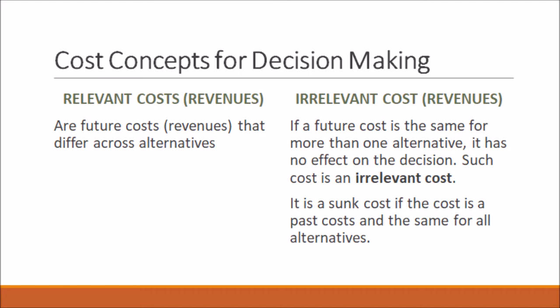What do we mean by relevant costs or revenues? These are the future costs or revenues that differ across alternatives. This may be the purchase price when considering making or buying a product, accepting or rejecting a product line, or shutting down versus continuing operations. You may consider variable costs, which are mostly indicated in the problem, or the relative increase or decrease in fixed costs — because an increase or decrease in fixed costs is also a relevant cost.